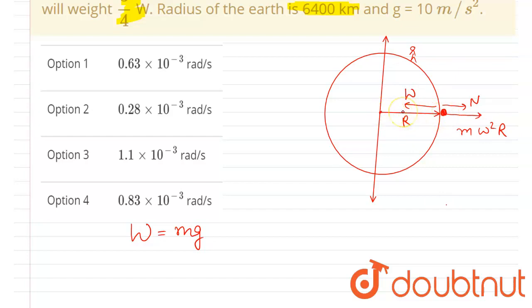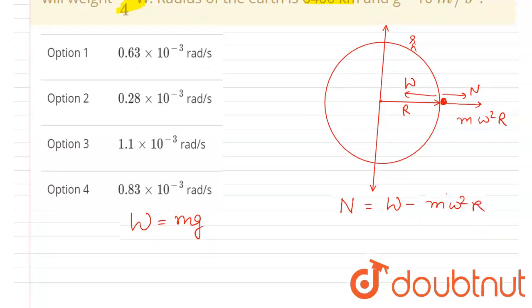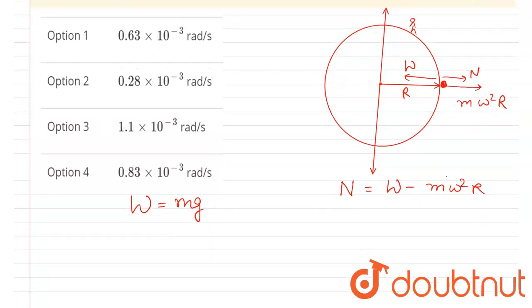Right, so if I say the normal reaction here is equal to W minus m·ω²·R, and this will be W'. So we can write that W', which is measured here, is W minus centrifugal force, simple.